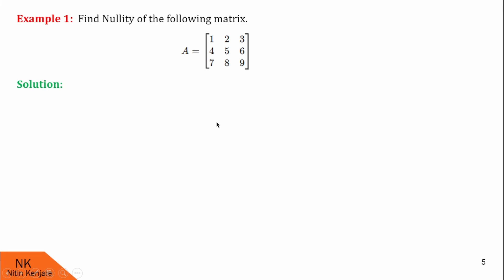So rank can be at most 3. Number of columns are also 3. So let us first reduce this matrix to row echelon form and find its rank by counting number of non-zero rows. First, I will reduce this position and this position entry to 0 using transformations R2 minus 4 times R1 and R3 minus 7 times R1.